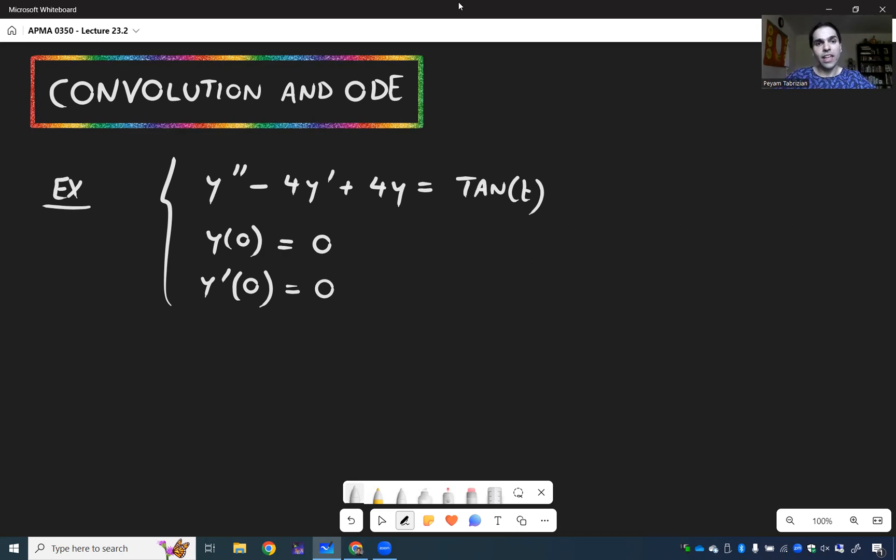And in order to do that, let's solve y double prime minus 4y prime plus 4y equals tangent of t, where y of 0 is 0 and y prime of 0 is 0. And the thing that gives it away is tangent of t, which isn't part of our Laplace transform table.